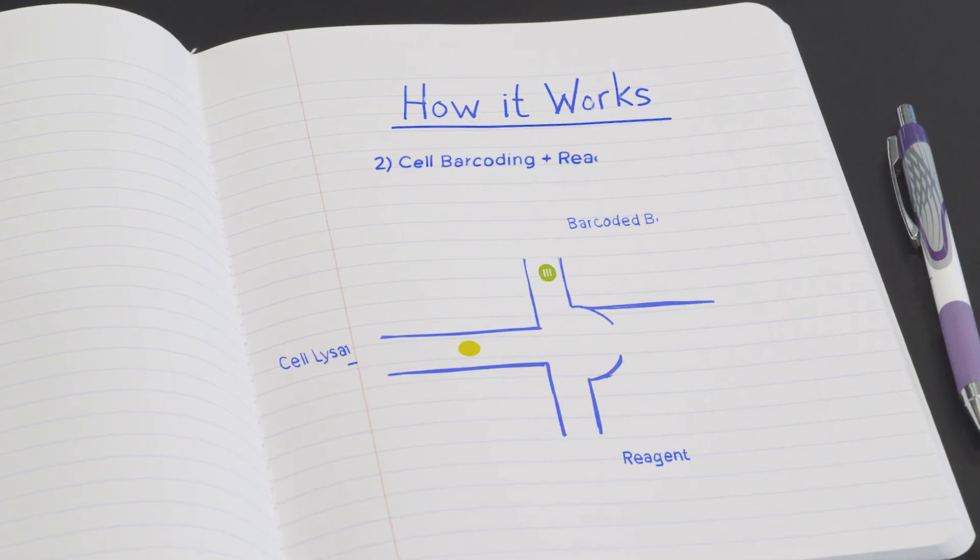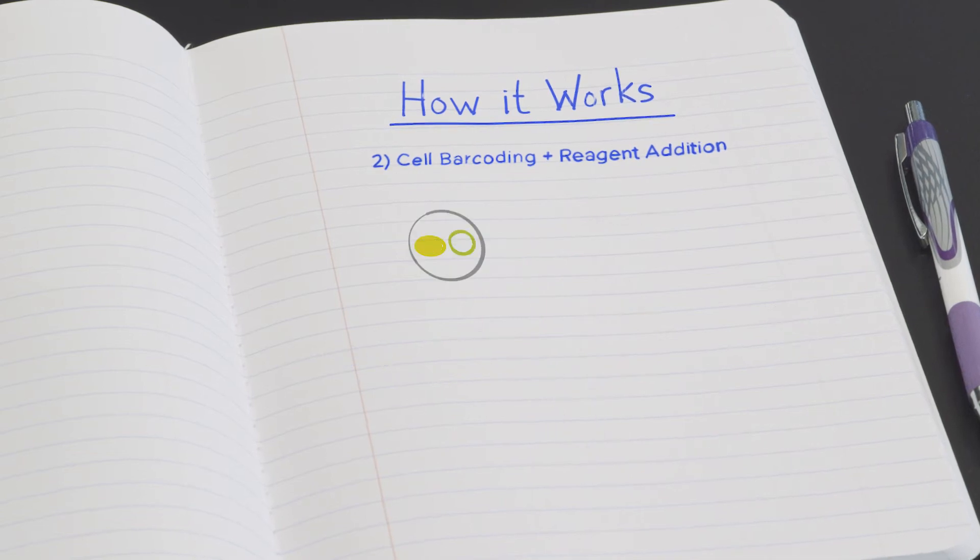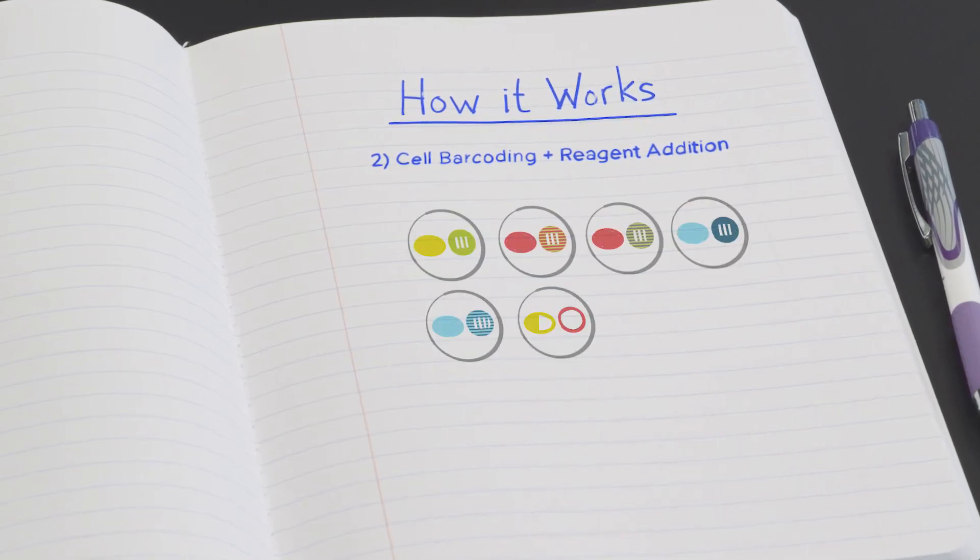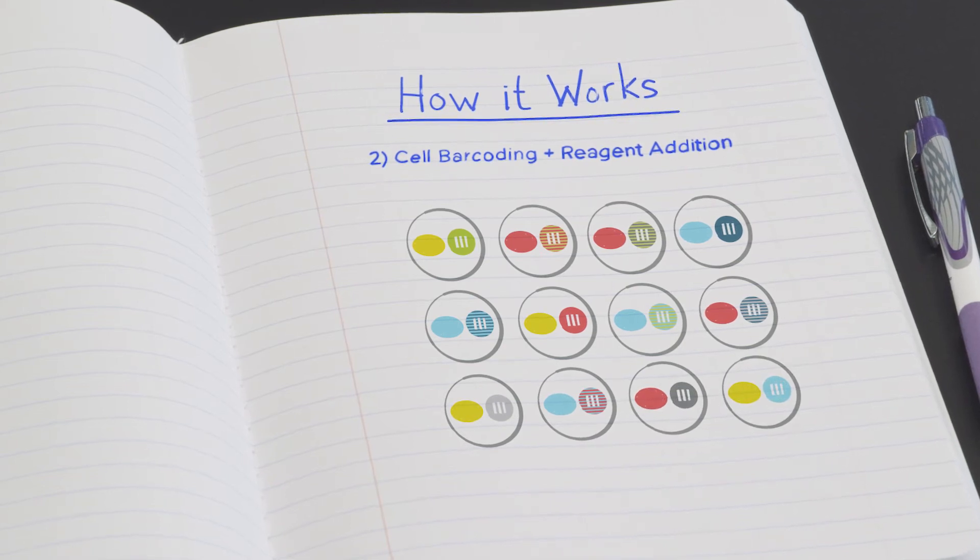Second, the lysate is combined with barcoded beads, primers, and reagents. Specific regions of interest are amplified and tagged with a unique cell barcode, preserving the cell's identity and its mutational profile.